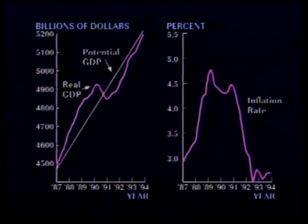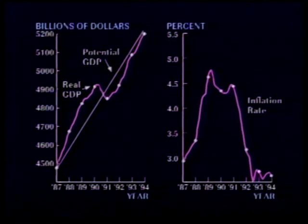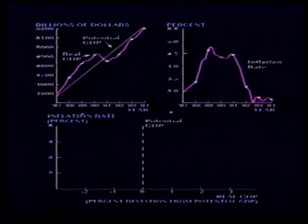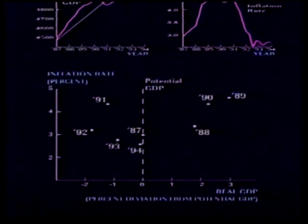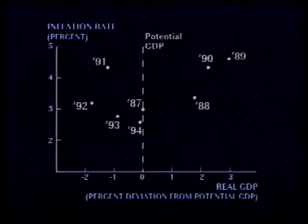This graph shows how inflation rose and fell within the same time period. The relationship between these rises and falls can be better understood by combining the data from both graphs into a scatter plot. Here, real GDP is on the horizontal axis, and inflation is on the vertical axis.